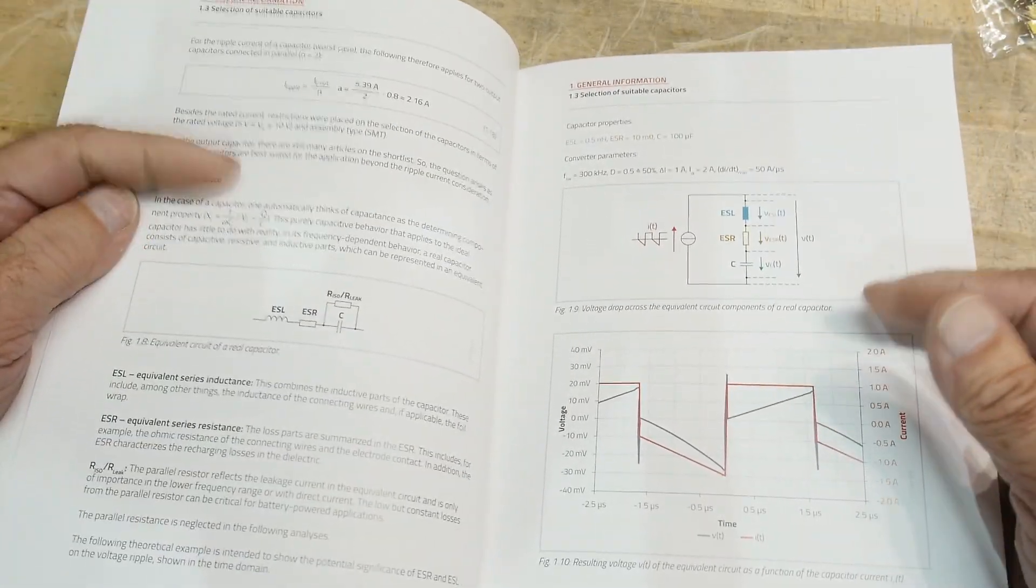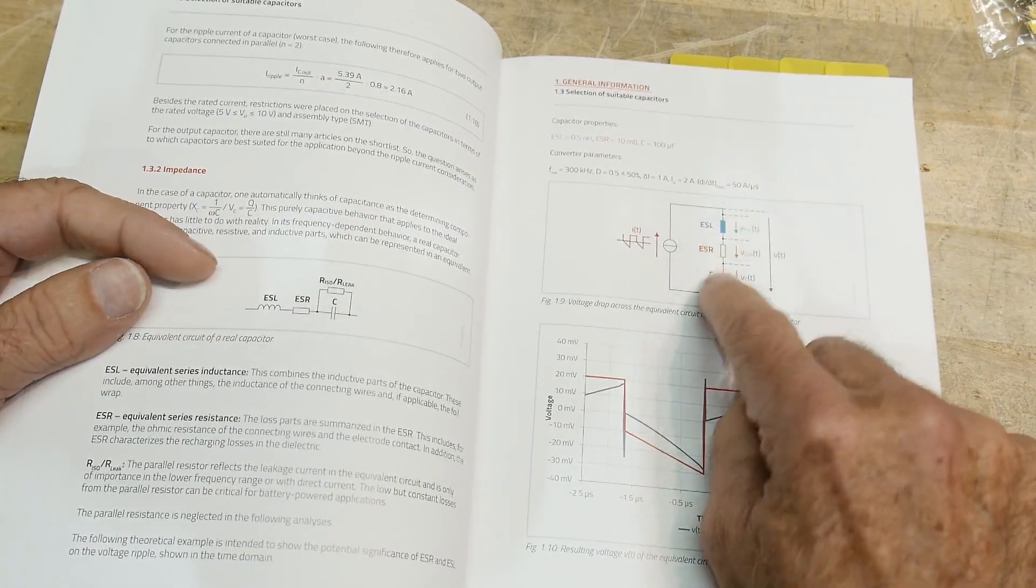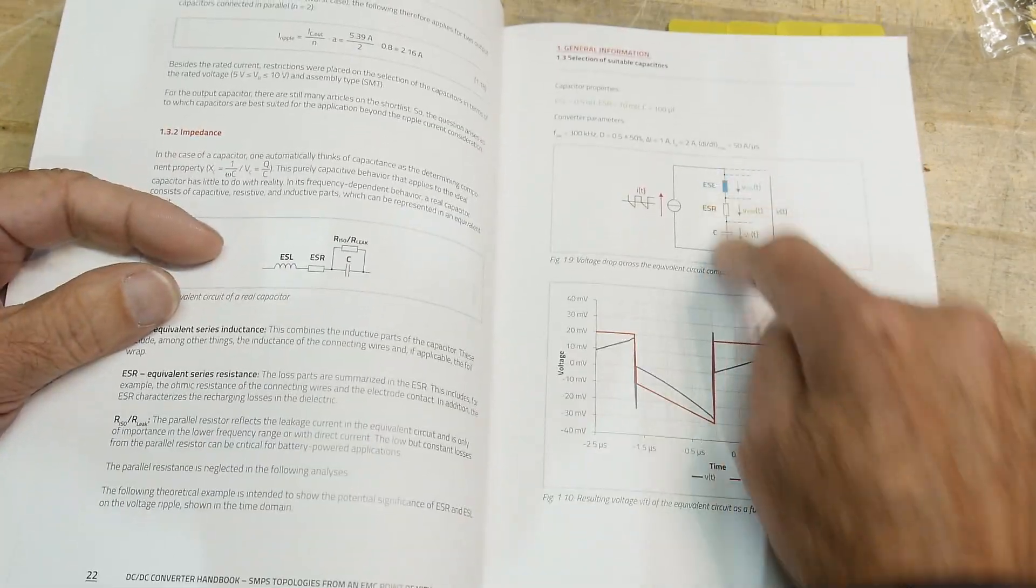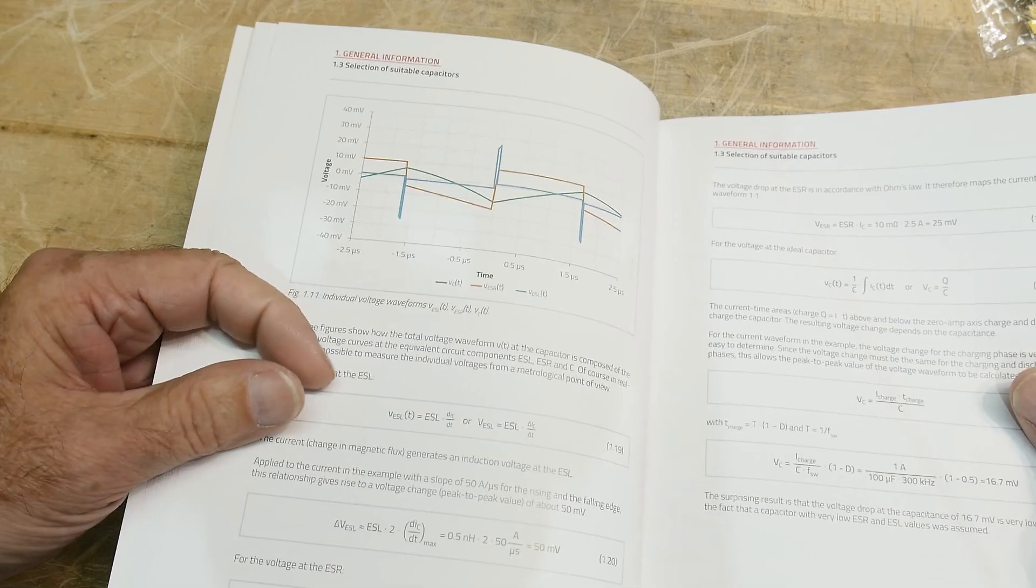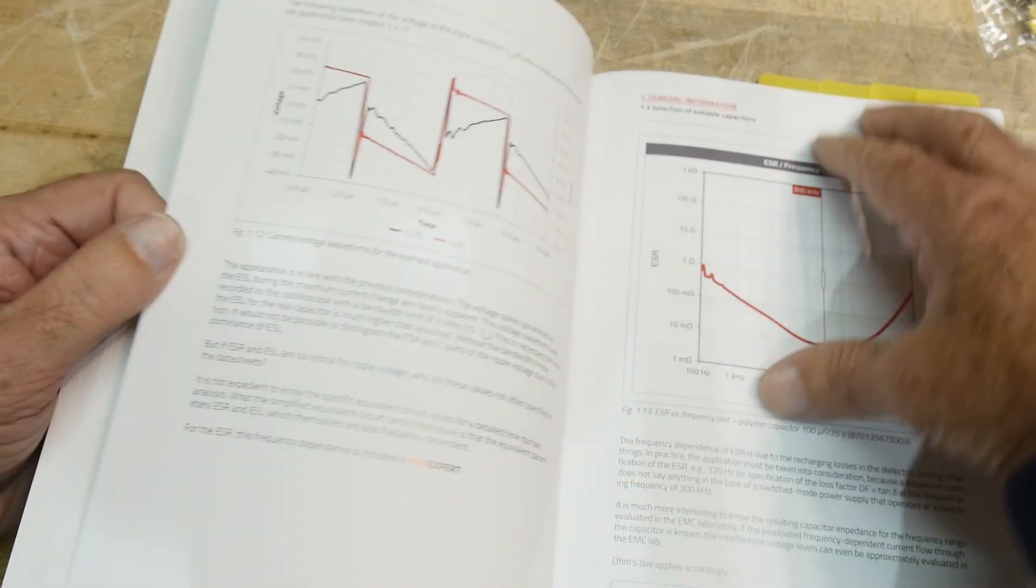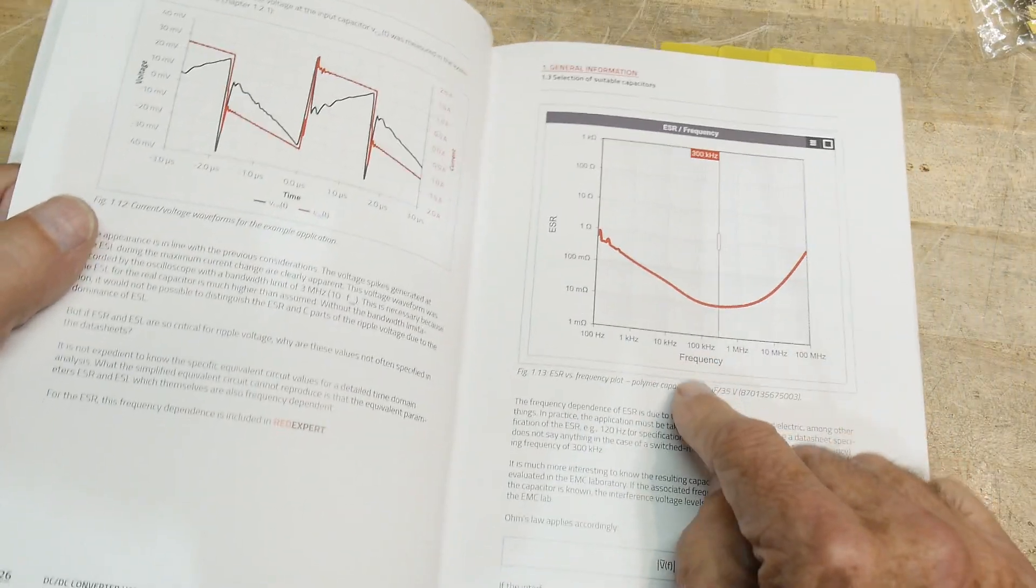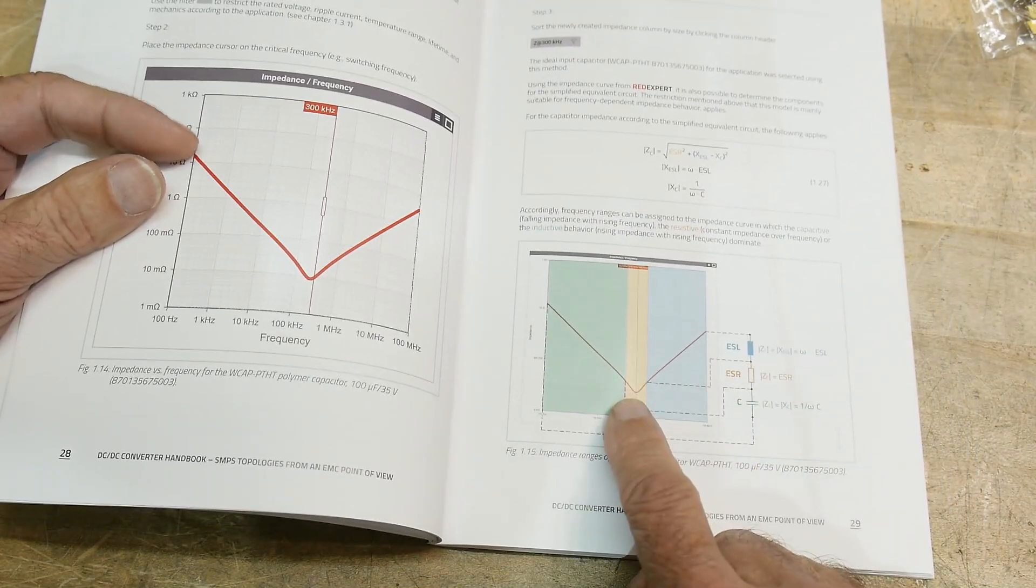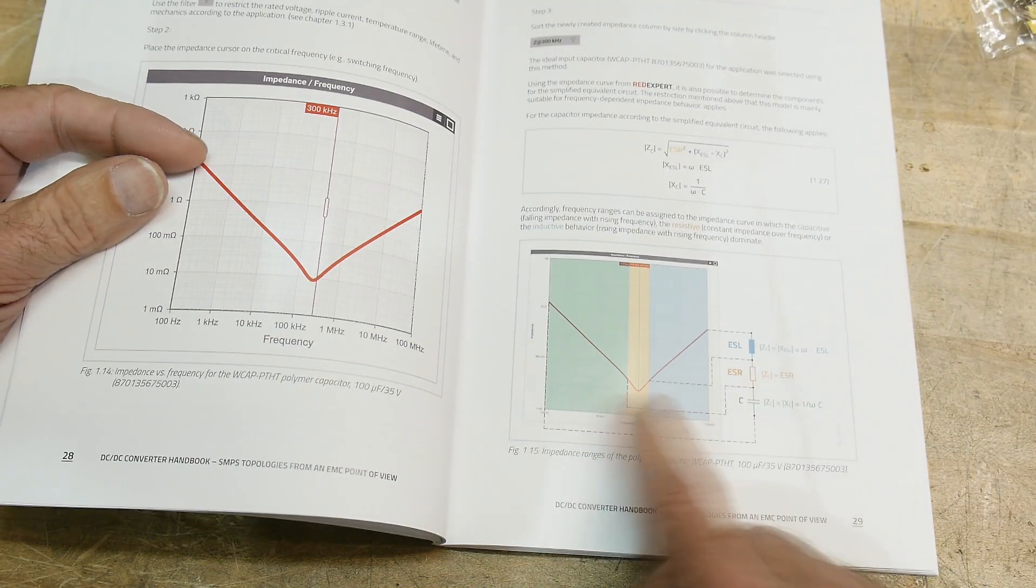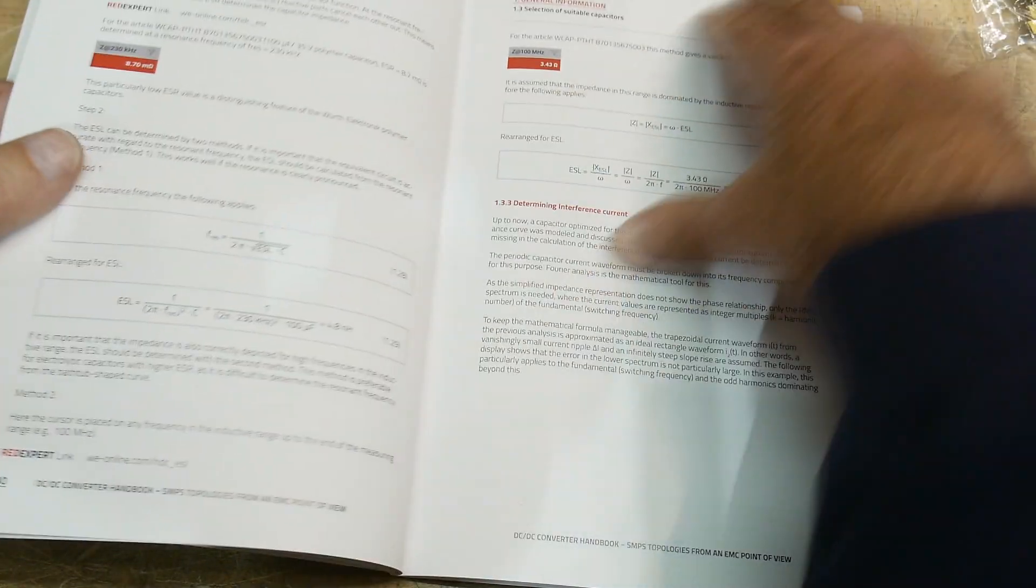In order to get rid of ripple, you need capacitors. But they have inductance and resistance and capacitance in a simple model. And how does that affect things? How do these curves start to look? These are kind of idealized curves. And then it talks about ESR, how ESR changes with frequency and why ESR is important, and how you get into the capacitance curve, and the ESR curve, and then the inductance curve.